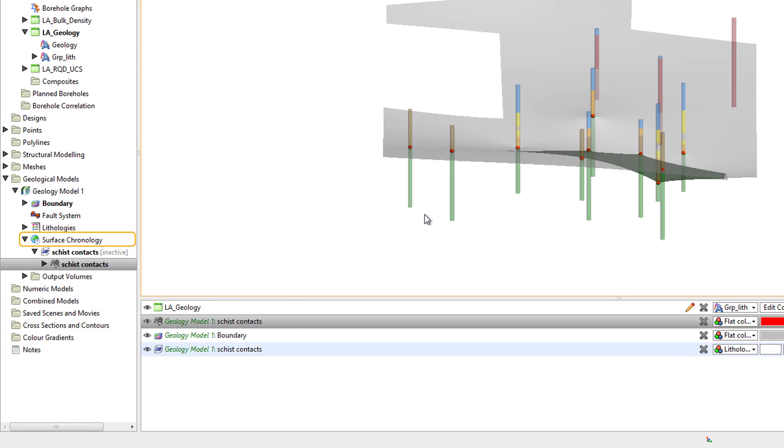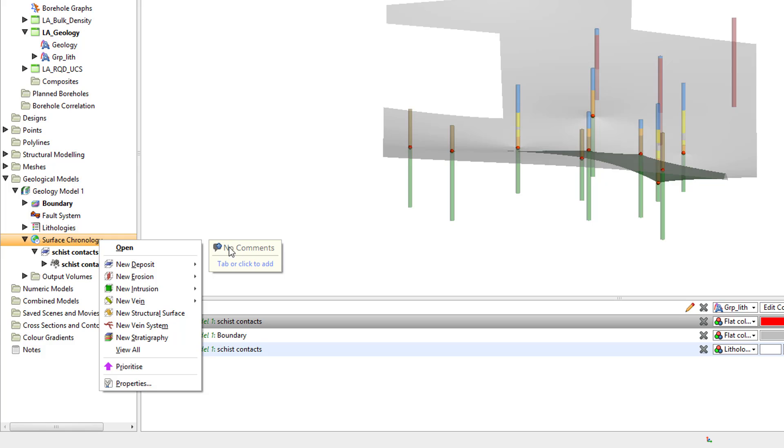The Surface Chronology subfolder in the Geological Model folder contains four different surface type functions: New Deposit, New Erosion, New Intrusion, and New Vane.